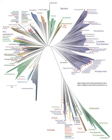Of the many twigs which flourished when the tree was a mere bush, only two or three, now grown into great branches, yet survive and bear all the other branches, so with the species which lived during long past geological periods, very few now have living and modified descendants.